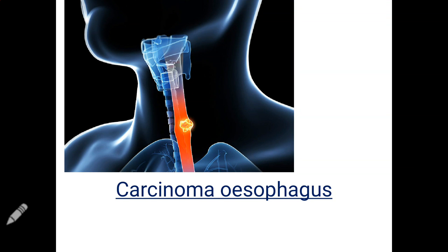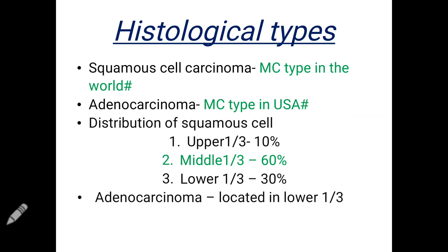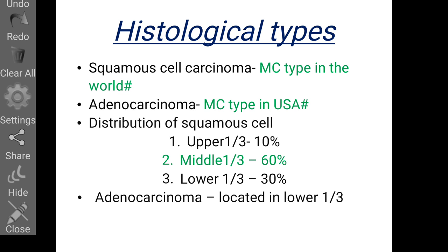Now let's talk about carcinoma esophagus. The most common types of esophageal carcinoma are squamous cell carcinoma and adenocarcinoma. A potential exam question: the most common type in the world is squamous cell carcinoma, whereas adenocarcinoma is the most common type in the US.